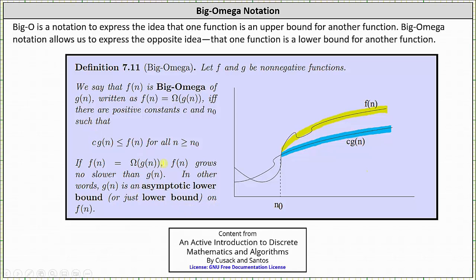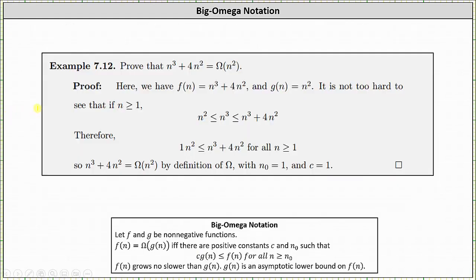Again, hopefully this makes sense by analyzing the graph on the right. And now take a look at a proof. Let's prove that n cubed plus 4n squared is big omega of n squared. Here we have f of n equals n cubed plus 4n squared and g of n equals n squared. We should be able to recognize that for n greater than or equal to 1, n squared is less than or equal to n cubed, which is less than or equal to n cubed plus 4n squared.